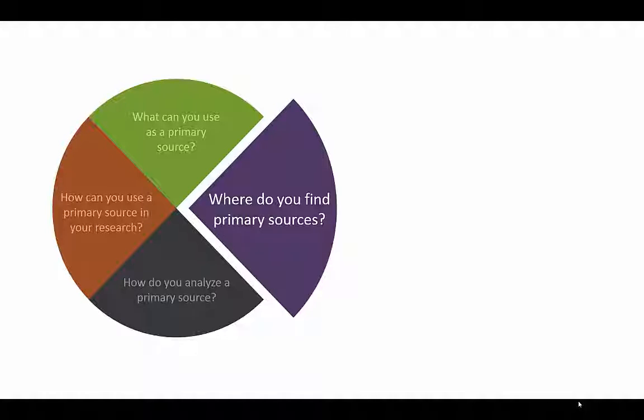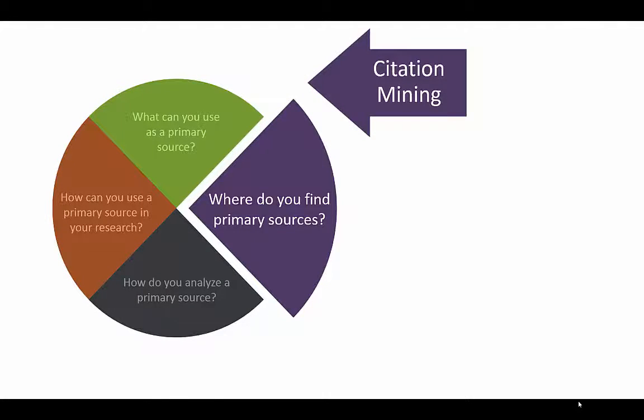Once you know the types of primary sources you'll need based on your research topic, there are two strategies that can help you find them: citation mining and deep web searching.